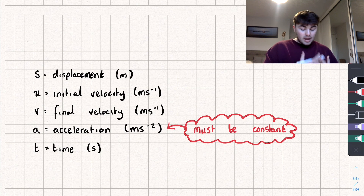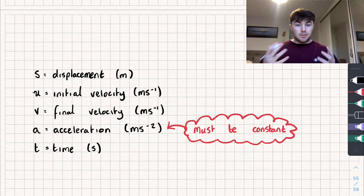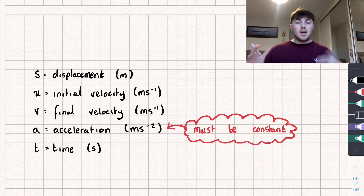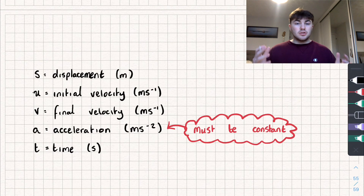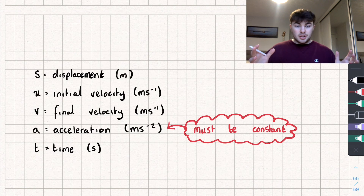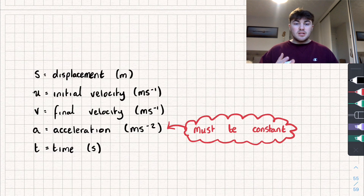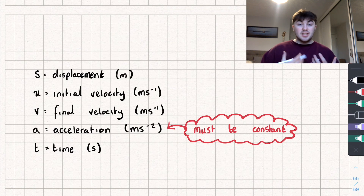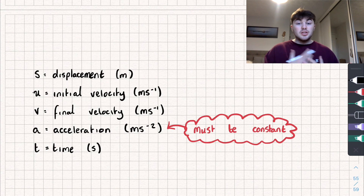S is our displacement. Displacement is measured in meters and it's the difference between where you started and where you finished — it's not necessarily your total distance traveled, just the difference between start and finish. Displacement is measured as a vector quantity, which means it has a size — a distance in meters — as well as a direction.